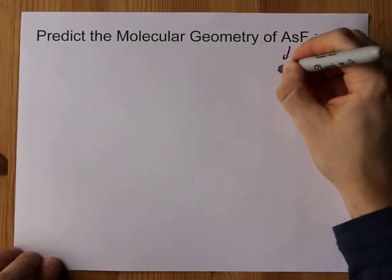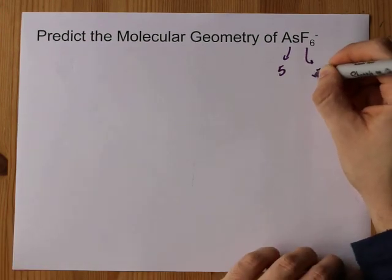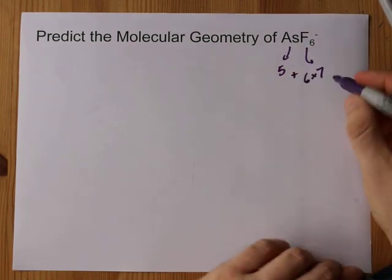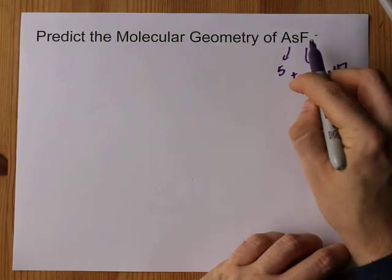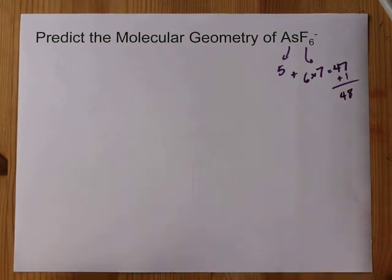As brings 5 valence electrons, and fluorine brings 7, but there are 6 of them. That's a contribution of 42 valence electrons. That gives me 47. But because there's an extra minus charge, you add one to get 48 valence electrons.